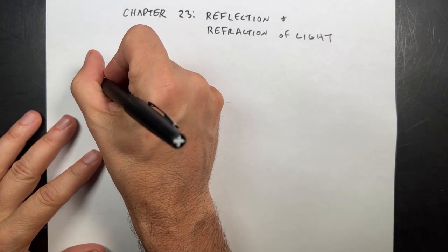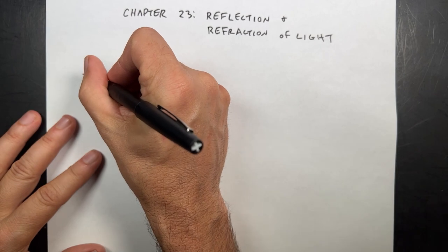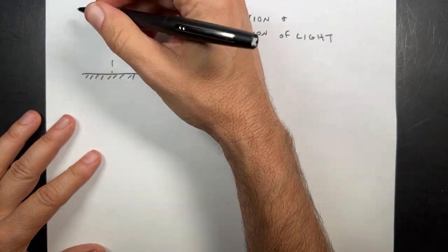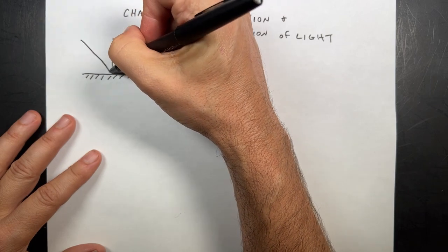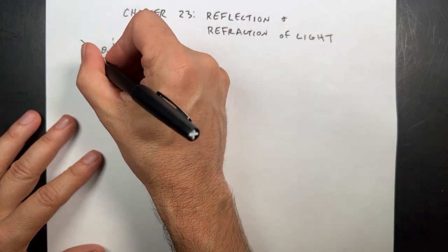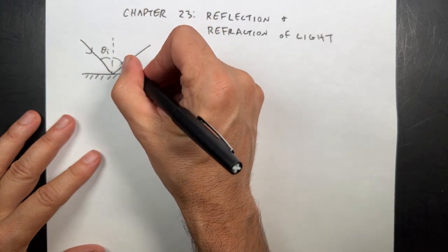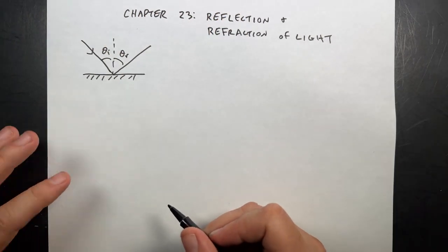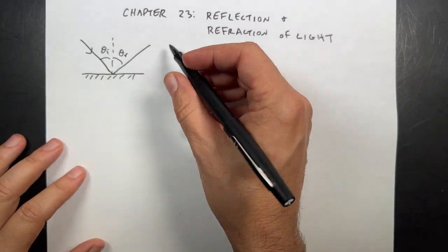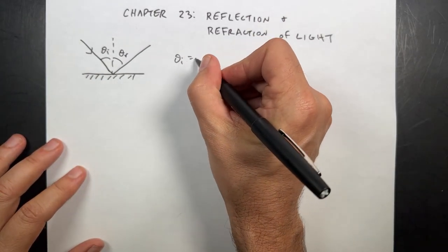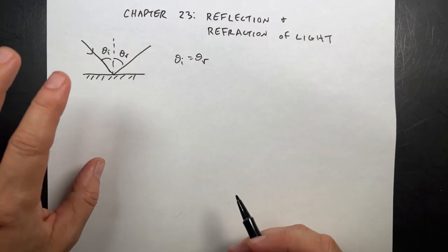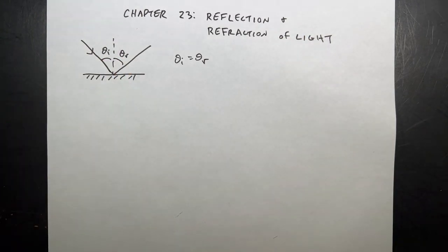If I have a smooth, very smooth surface like this, and I have light come down, it's going to reflect off at some angle. Theta Incident is the angle of incidence, Theta Reflected. For a normal surface, the law of reflection says Theta I equals Theta R. So the angle of incidence and the angle of reflection are equal, and I'll show you that.